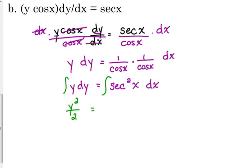Now we can integrate. The antiderivative of y is y squared over 2. Notice it doesn't always end up being 1 over y — a lot of times it is, but not always. So that's y squared over 2. What's the antiderivative of secant squared? Tangent of x — and don't forget the plus c. So that would be the implicit solution.